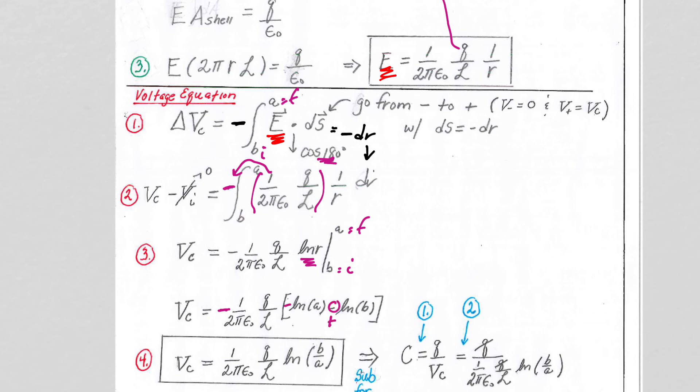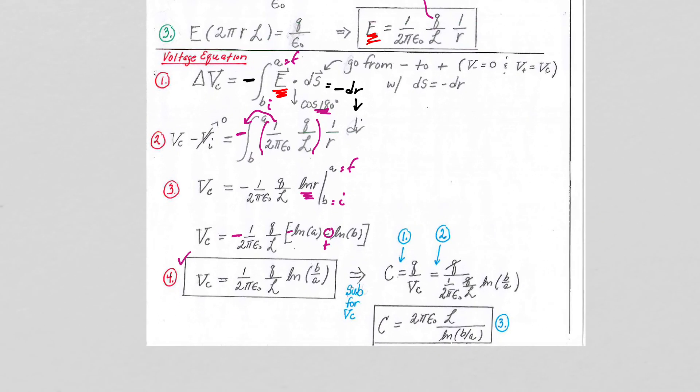And we will do the same thing we have been doing. We will take our voltage and plug it into the C equals q/V. We lose the q's, we do a little bit of algebra, and we get our capacitance.